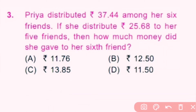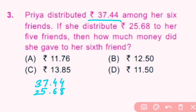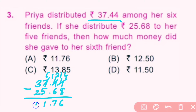Question number 3: Priya distributed rupees 37.44 amongst her friends. She distributed rupees 25.68 to her 5 friends. How much money did she give to her 6 friends? The total amount is 37.44 and she distributed 25.68 to 5 friends, so remaining money went to 6 friends. Subtracting: 37.44 minus 25.68. 14 minus 8 is 6; 13 minus 6 is 7; 6 minus 5 is 1; 3 minus 2 is 1. Remaining money is 11.76. A is the correct answer.